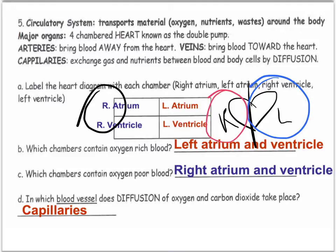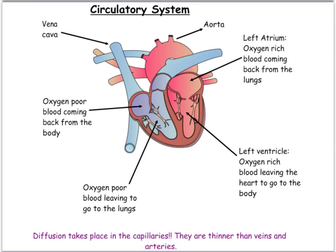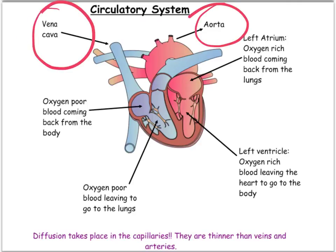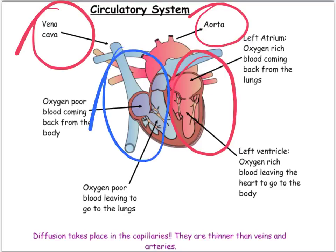In which blood vessels does diffusion of oxygen and carbon dioxide occur? We already said capillaries. Here's a diagram of the heart — know where the aorta is and where the vena cava is. Oxygen-rich blood is on this side and oxygen-poor blood is on this side.